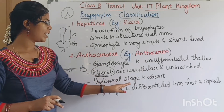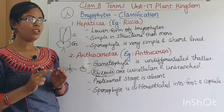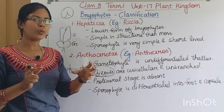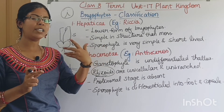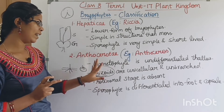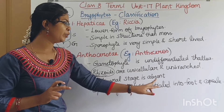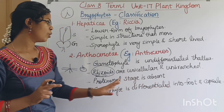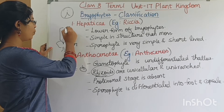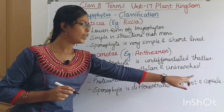The protonema stage is absent in this class. In the protonema stage, spores germinate to give rise to a new plant — but this stage is absent here. The sporophyte is differentiated into foot and capsule.